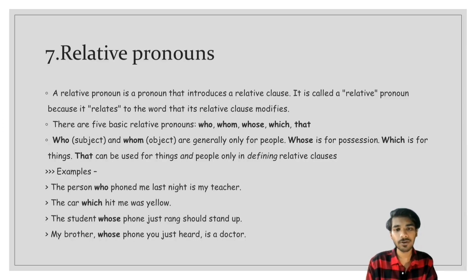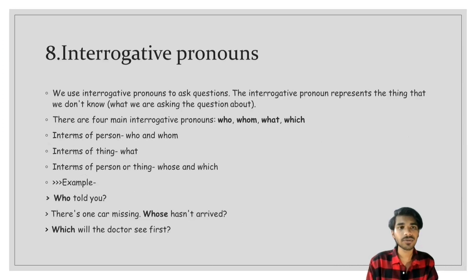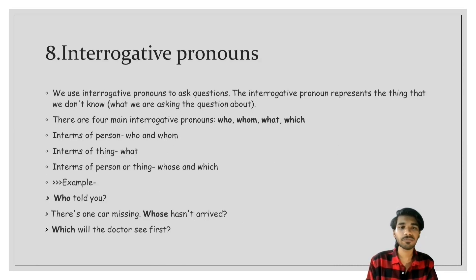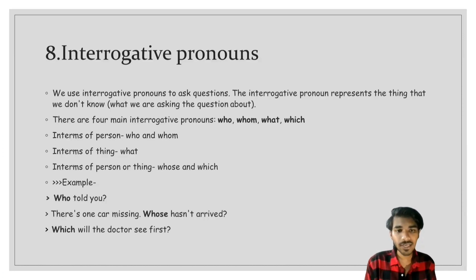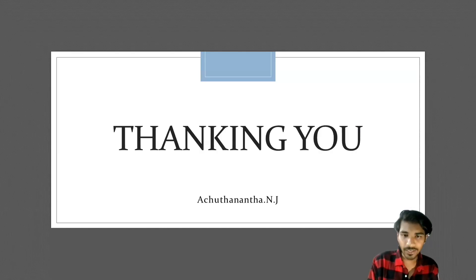The eighth and last type is interrogative pronoun. We use interrogative pronouns to ask questions. The interrogative pronoun represents the thing we don't know — what we are asking about. There are four main interrogative pronouns: who, whom, what, and which. 'Who' and 'whom' are used for persons, 'what' for things, and 'whose' and 'which' for persons or things. Examples: 'Who told you?' — 'who' is interrogative. 'Whose hasn't arrived?' — 'whose' is interrogative. 'Which will the doctor see first?' — 'which' is interrogative. Thank you, bye bye.